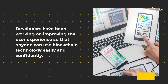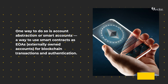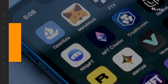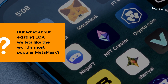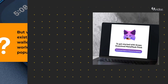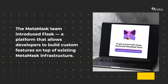One way to do so is account abstraction, or smart accounts — a way to use smart contracts as EOAs (externally owned accounts) for blockchain transactions and authentication. But what about existing EOA wallets like the world's most popular MetaMask? The MetaMask team introduced Flask, a platform that allows developers to build custom features on top of existing MetaMask infrastructure.